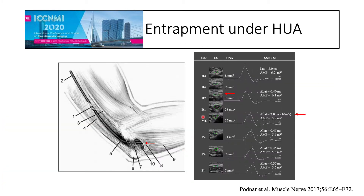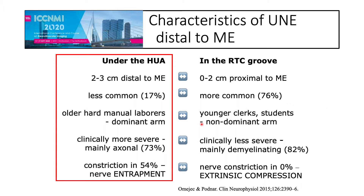With entrapment at this position, you can see a very thin nerve and thickening of the ulnar nerve proximal to the entrapment site. The level of entrapment is about 2 cm distal to the medial epicondyle, and the conduction velocity in motor fibers can be as low as about 10 m/s. This distal lesion — 2 to 3 cm distal to the medial epicondyle — is less common, occurs in older hard manual laborers, affects the dominant arm, is clinically more severe, mainly axonal, and nerve constriction can be found in more than half of these cases.